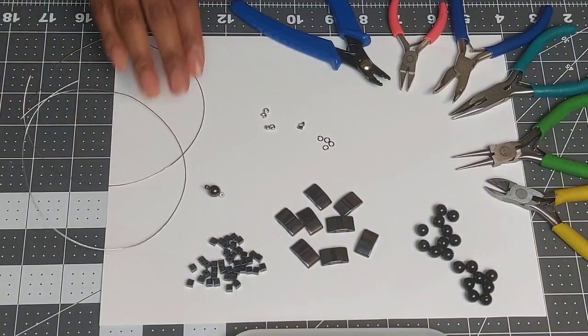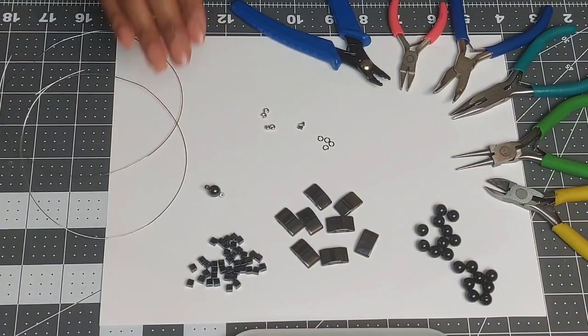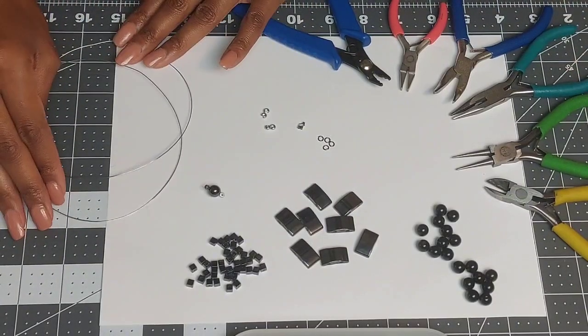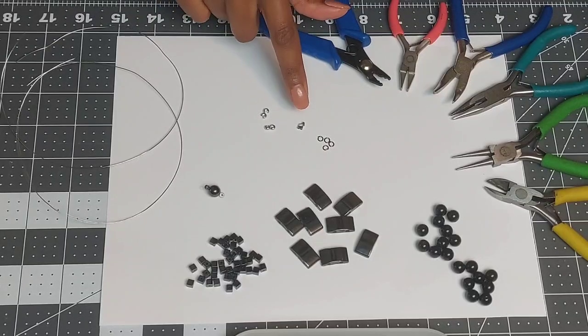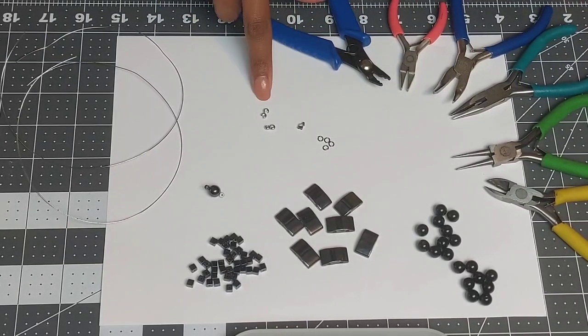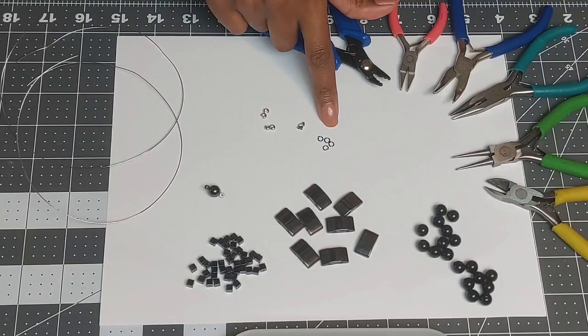Two pieces of 24 gauge wire cut to 15 inches each. You may not need the full 15 inches. I just like to give myself a little bit of wiggle room when I'm cutting wire. Some crimp tubes or beads and also the crimp covers to go with it and some jump rings.